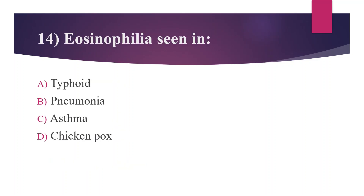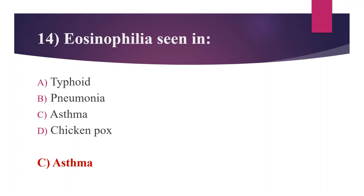Fourteenth question: eosinophilia is seen in — Option A: typhoid. Option B: pneumonia. Option C: asthma. Option D: chickenpox. The answer is Option C, asthma. Eosinophilia is seen in parasitic infections and allergic conditions like asthma. Neutrophilia is seen in typhoid and pneumonia. Lymphocytosis is seen in chickenpox, which is a viral infection.